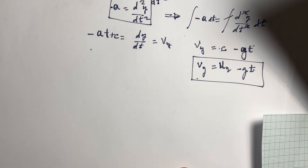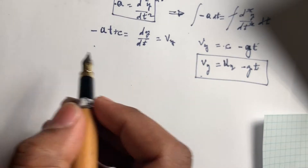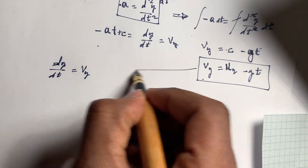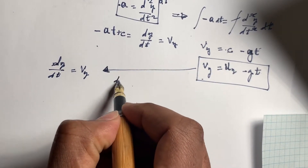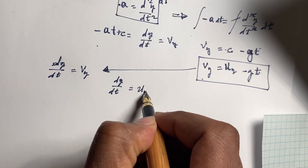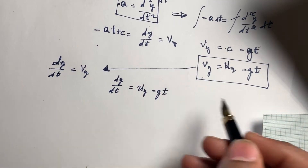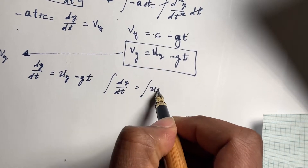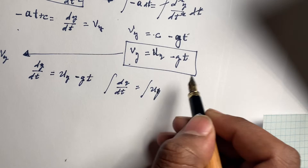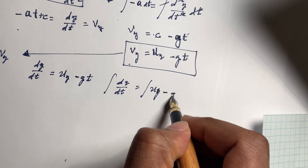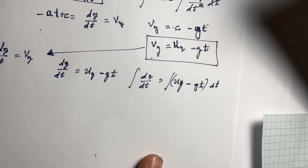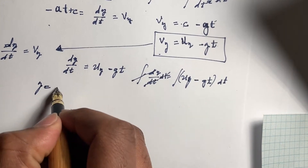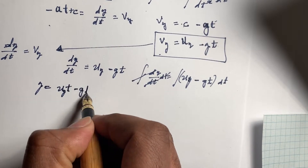The velocity is the derivative of position. So dy/dt equals v along y. We write dy/dt equals u along y minus gt. If we take the integral of both sides, y equals u_y times t minus g·t² over 2, using the rule that the integral of t is t²/2.